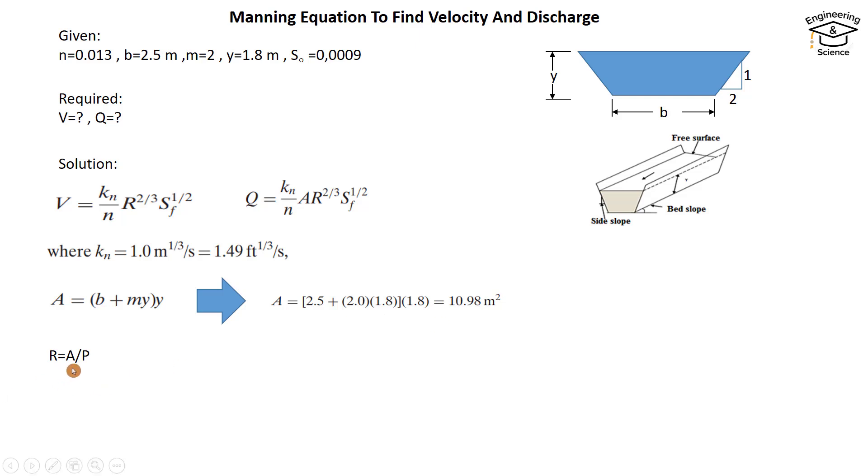In the same way, we have to find the hydraulic radius, because hydraulic radius equals area over wetted perimeter. So we have to find the wetted perimeter.